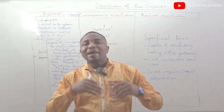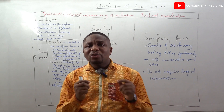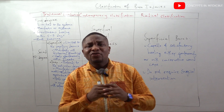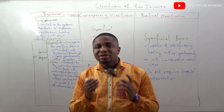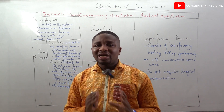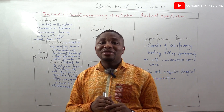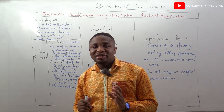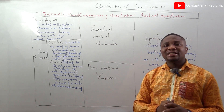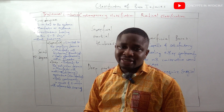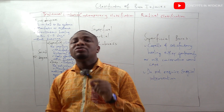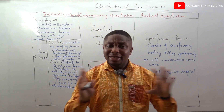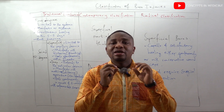The second degree superficial burn is capable of healing spontaneously within three weeks without unfavorable scarring. It is also very painful. Corresponding it to the contemporary classification, it corresponds to the superficial partial thickness burns. In the radical classification it corresponds to the superficial burns, meaning they do not require surgical intervention and are capable of healing satisfactorily either spontaneously or with conservative wound care.